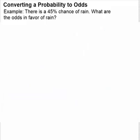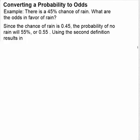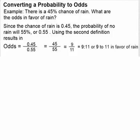Now let's look at a problem where we convert a probability into odds. For example, there is a 45% chance of rain. What are the odds in favor of rain? Since the chance of rain is 45%, we can write that as 0.45. That means the probability of no rain is 55% or 0.55. Using the definition, odds equals the probability of the favorable event divided by the probability of the unfavorable event, so we get 0.45 divided by 0.55, which is 45 over 55, and that simplifies to 9/11. So odds in favor of rain are 9 to 11.